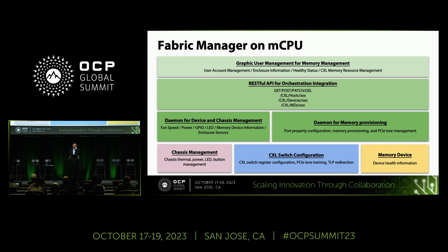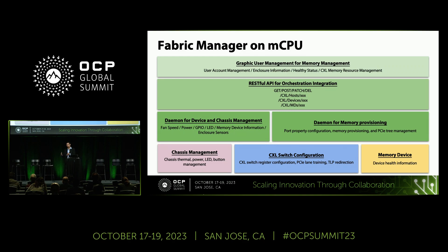This is the software block. We have software for chassis management — fan management, power management, and switch register configurations, where the management CPU handles register management. We also manage the memory devices, collecting all information from the CXL memory controllers and aggregating it as a CLI. We use the RESTful API to integrate with system orchestration. The orchestration sends commands specifying which host needs what memory, and we follow those rules. When memory needs to be removed from a host, we double-confirm, because if you just move memory away, the host will crash.